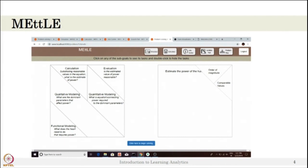METEL gives sub-problems for engineering estimation: quantitative modeling, calculation, estimation, and evaluation. All these sub-problems are needed to understand engineering estimation skills. Each sub-problem is further broken down into tasks, which you can see on the right side of the screen. This is called the problem map.